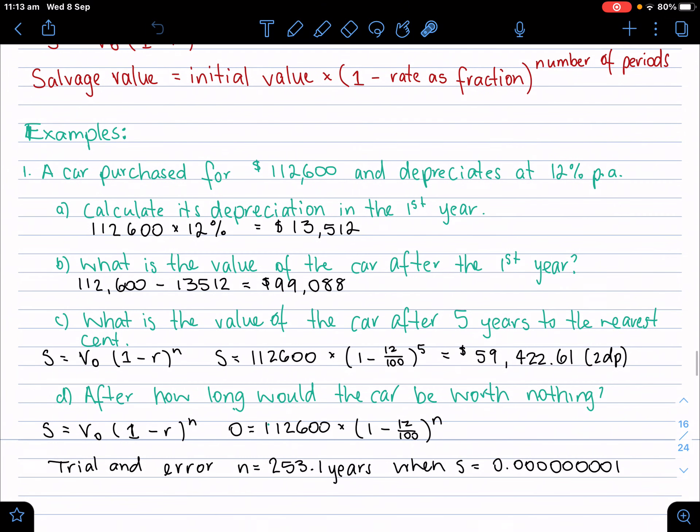So let's do a few examples. A car purchased for $112,600 depreciates at 12% per annum. Now remember, per annum means per year.